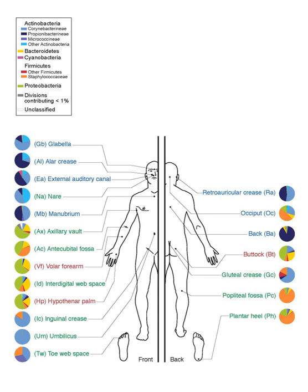A microbiota is an ecological community of commensal, symbiotic and pathogenic microorganisms found in and on all multicellular organisms studied to date, from plants to animals. A microbiota includes bacteria, archaea, protists, fungi and viruses.